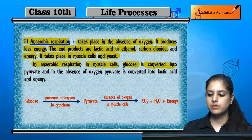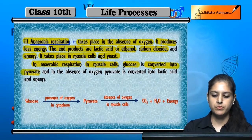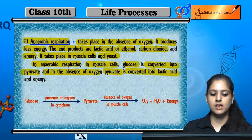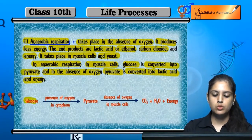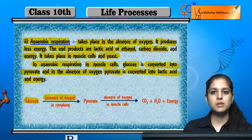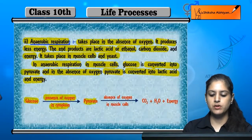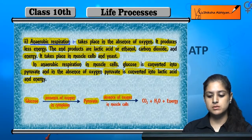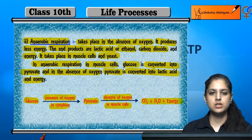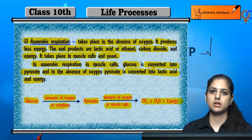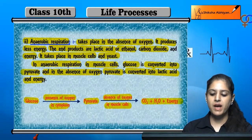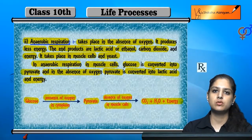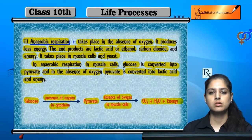In anaerobic respiration, glucose is converted into pyruvate in the cytoplasm. Then, in the absence of oxygen, pyruvate is converted into lactic acid and energy. The key difference is in pyruvate conversion: if pyruvate is broken down in the presence of oxygen, it is aerobic; if in the absence of oxygen, it is anaerobic.